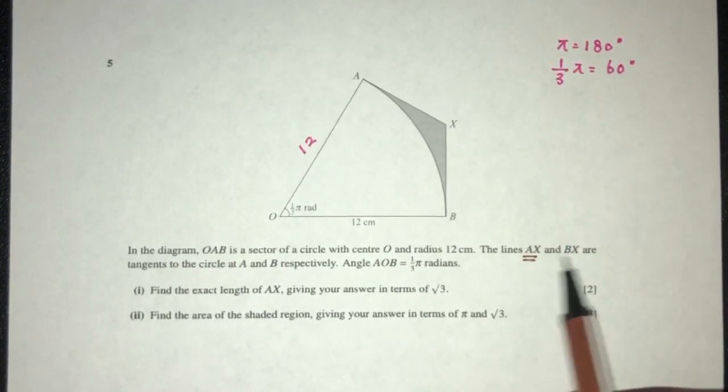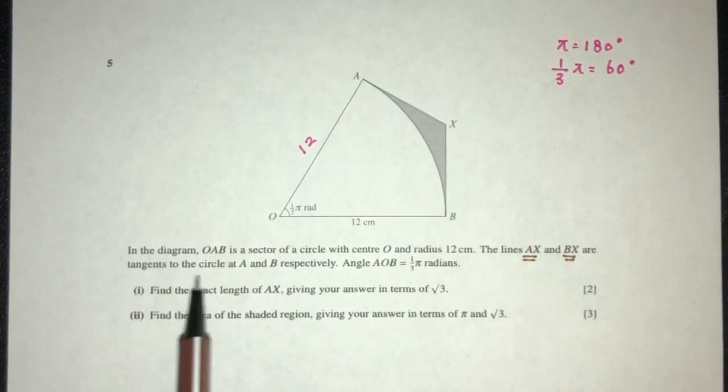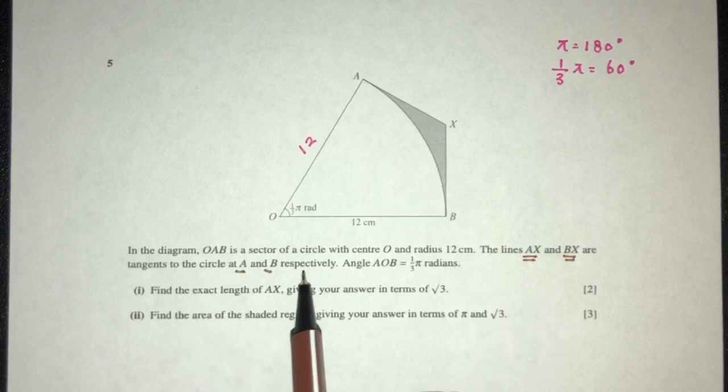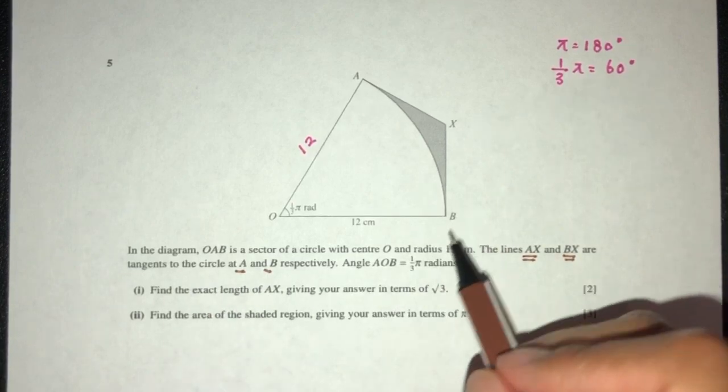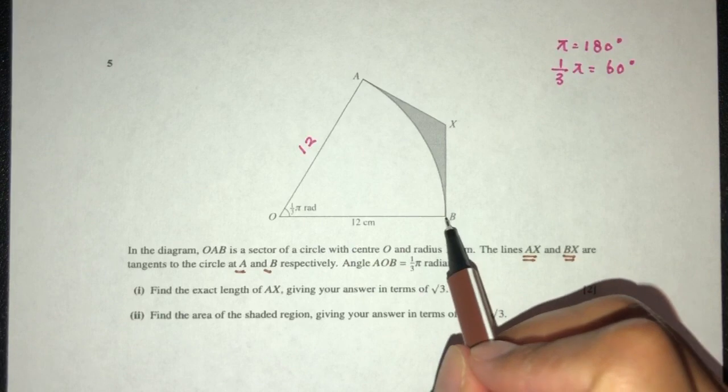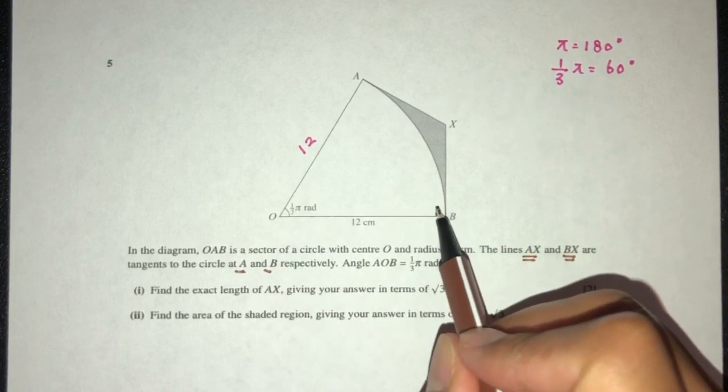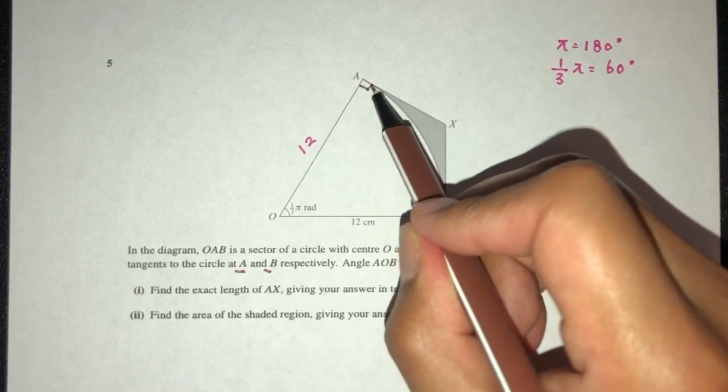The lines AX and BX are tangents to the circle at A and B respectively. These two are tangent. They join with the center, which means this has to be 90 and this has to be 90.